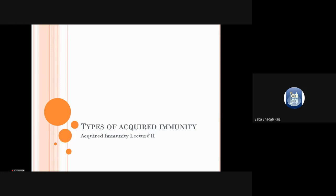This is the second lecture on acquired immunity. We will be discussing the types of acquired immunity. In the last lecture, we discussed the mechanism of action of acquired immunity — the humoral immunity, that is antibody-mediated immunity, and the cellular or cell-mediated immunity, also called T-cell mediated immunity. In this lecture, we will see the different types of acquired immunity.